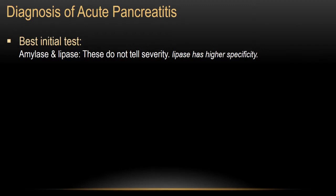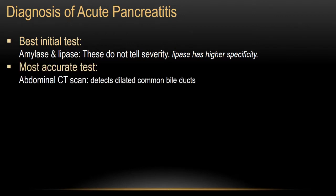These enzymes do not tell severity. You can have high enzymes one day and low enzymes the next, and still have acute pancreatitis. The most accurate test to diagnose acute pancreatitis is abdominal CT scan, which can detect dilated common bile ducts that could be due to gallbladder stones.